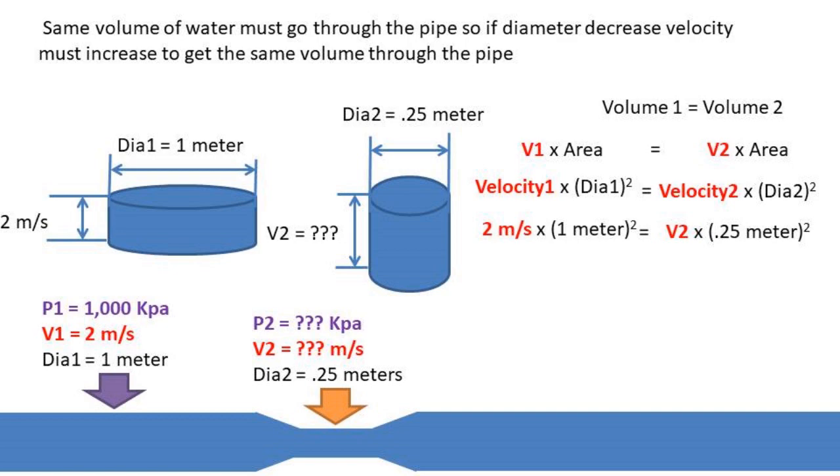So, if we reduce the size of the pipe, the velocity must increase to accommodate the same volume of water. Setting the two points' volumes equal to one another and rearranging the formula, we get that the velocity at point 2 is 32 meters per second.